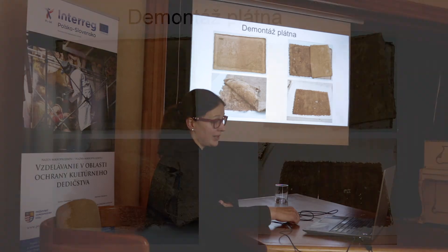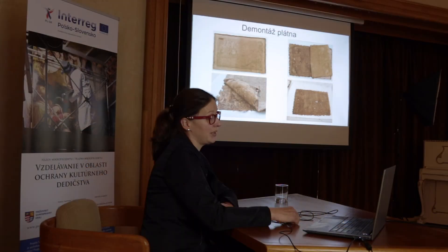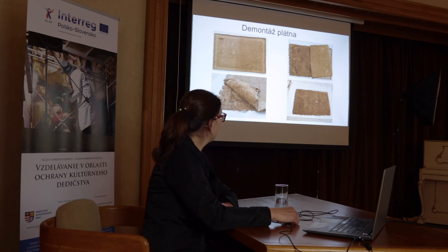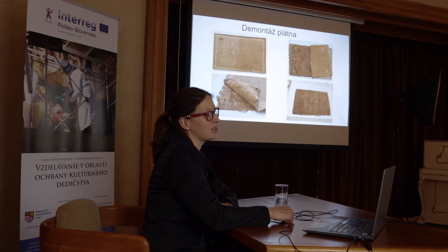Potom následovala demontáž plátna. Ta sekundární podložka – rentoaláž – je tam nanesená z nějakého důvodu, vždy ne bezdůvodně. Je to kvůli tomu, že originální plátno je poškozené a velmi křehké, takže se v různých historických obdobích používaly různé materiály na podlepení. V tomhle případě tam bylo klihoškrobové lepidlo, na kterém úplně nádherně rostou všechny ty plísně a mikroorganismy, protože to je pro ně jako kultivační skleníček s hnojivem.